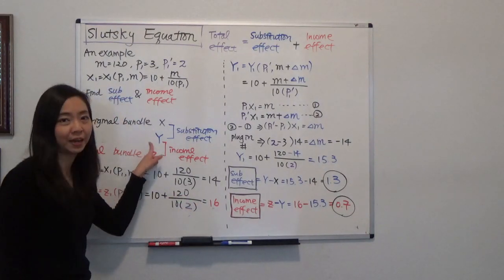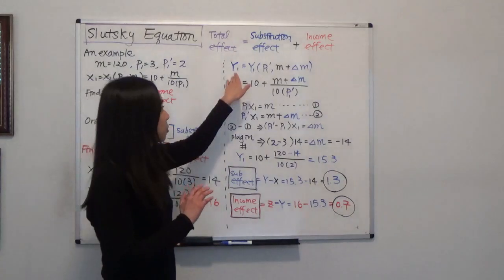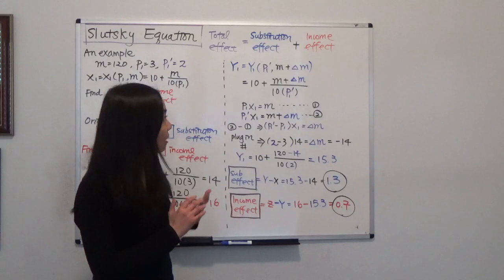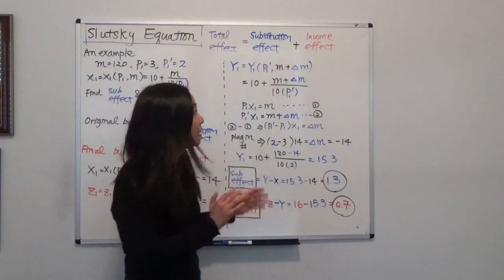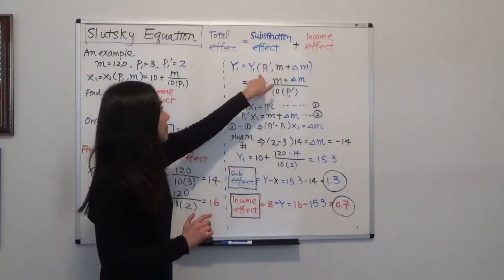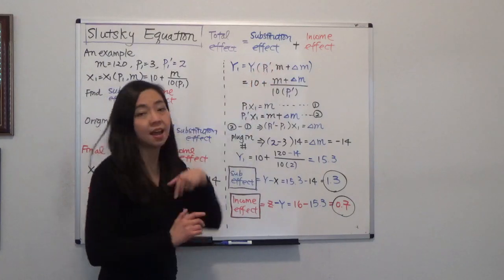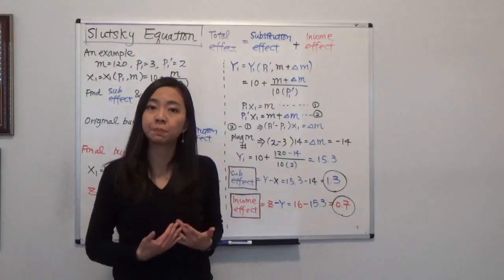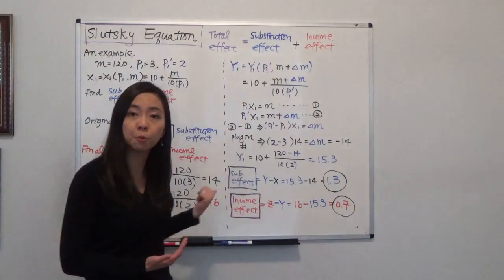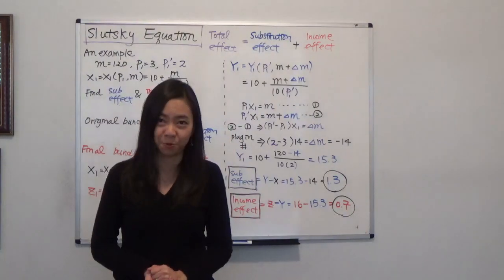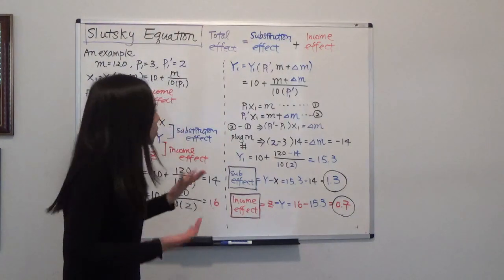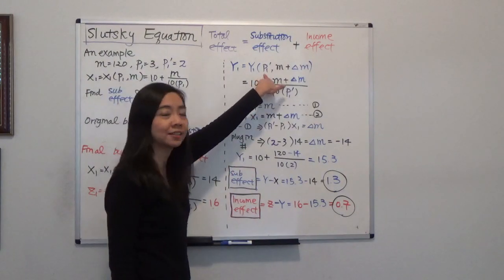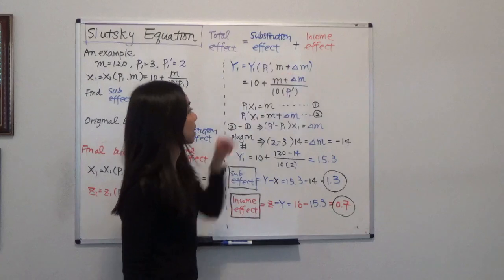Our next goal is to find bundle Y — that in-between bundle. Bundle Y is the bundle after I change your income. After the price has changed to P1' (the new price), I am going to give you money or take away money so that the original bundle is just affordable for you to purchase.